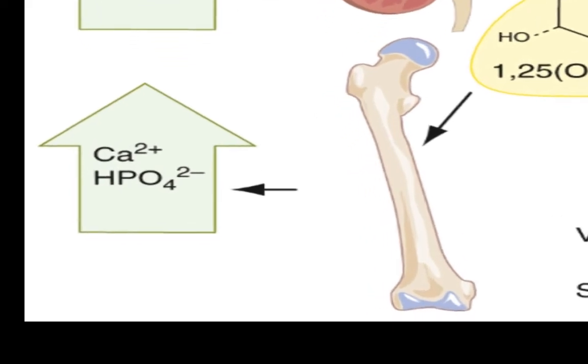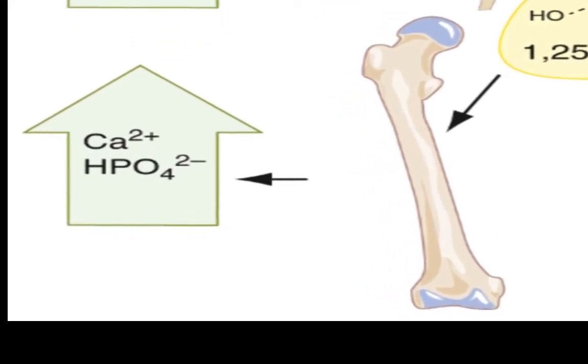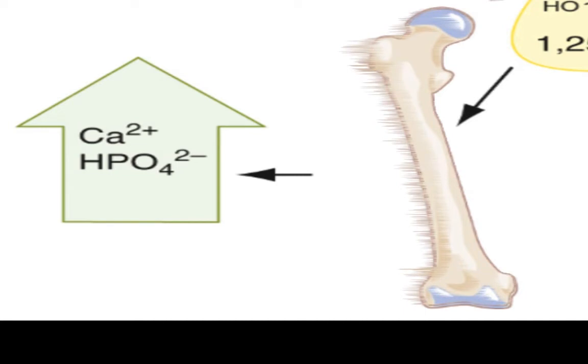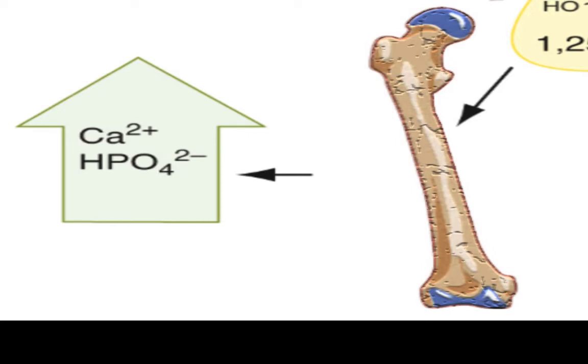On bone, vitamin D has a more complex effect. First, it enhances the activity of osteoclasts, thus promoting bone resorption. However, this is to resorb superficial bone and make plasma calcium more available to internal bone, which results in bone mineralization and strengthening of bone.